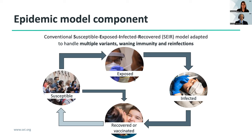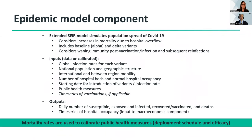All of this is simulated for multiple variants. The possibility of becoming reinfected increases with time as immunity from prior infection or vaccination wanes, and reinfections occur though at much lower levels than initial infections. The extended SEIR model also simulates increases in mortality due to hospital overflow. The default version includes a baseline variant resembling the one present for most of 2021, as well as the Delta variant that became dominant in the later parts of 2021. It considers waning immunity post-vaccination and subsequent reinfections.